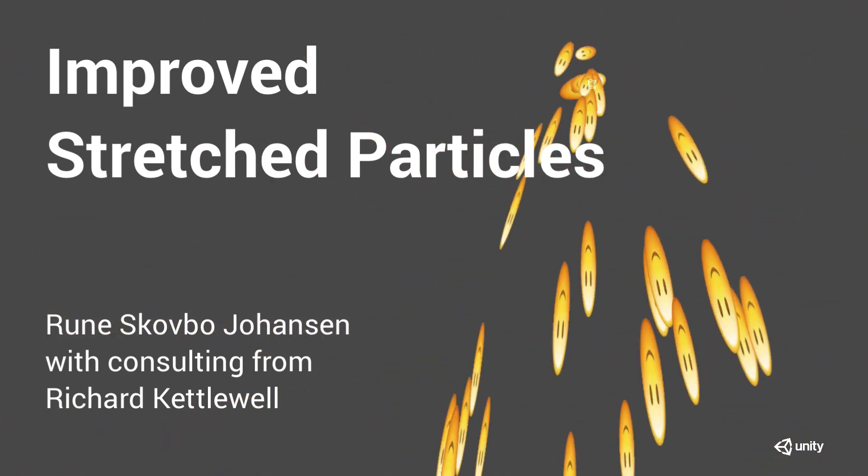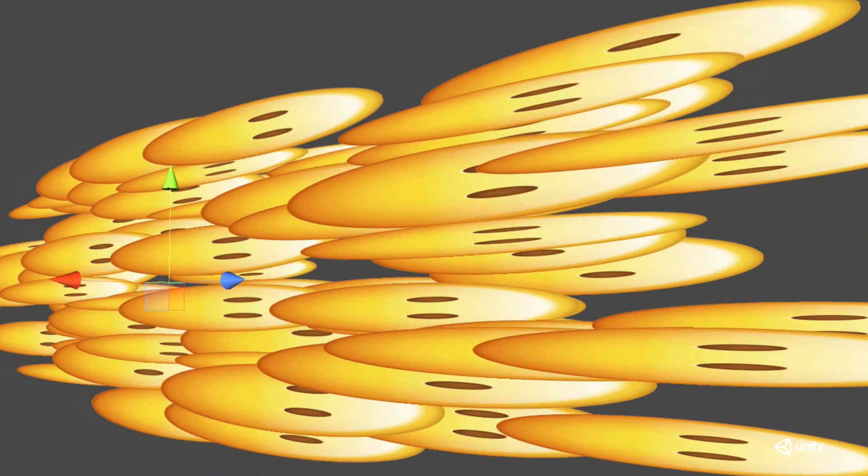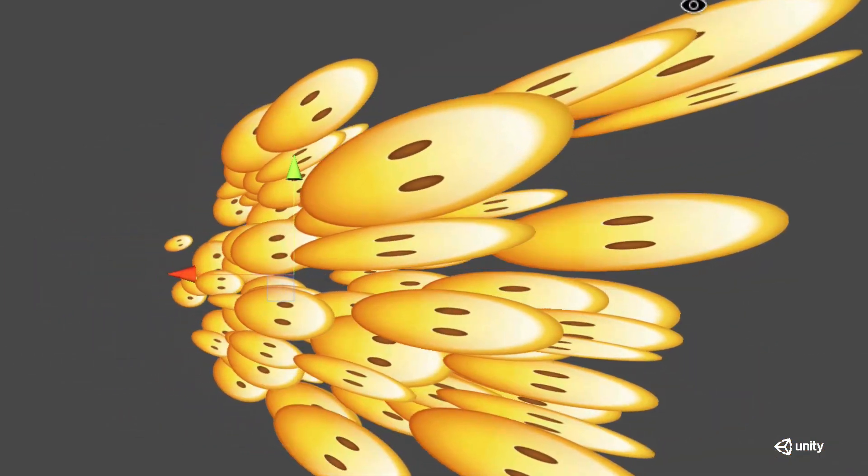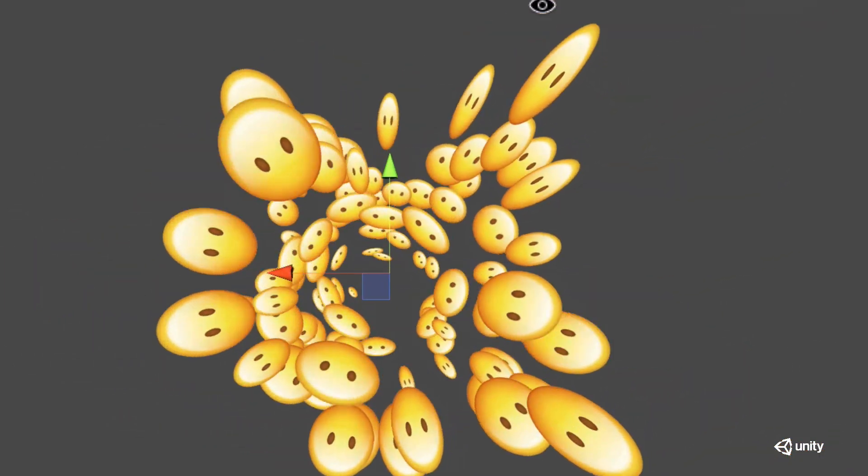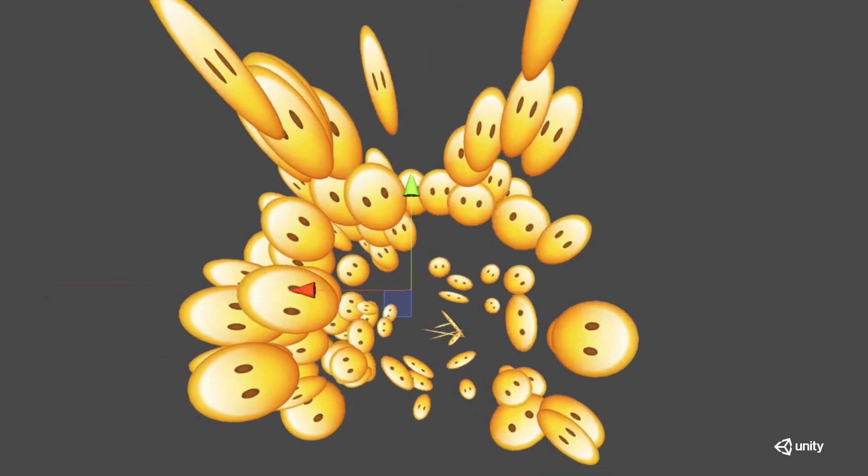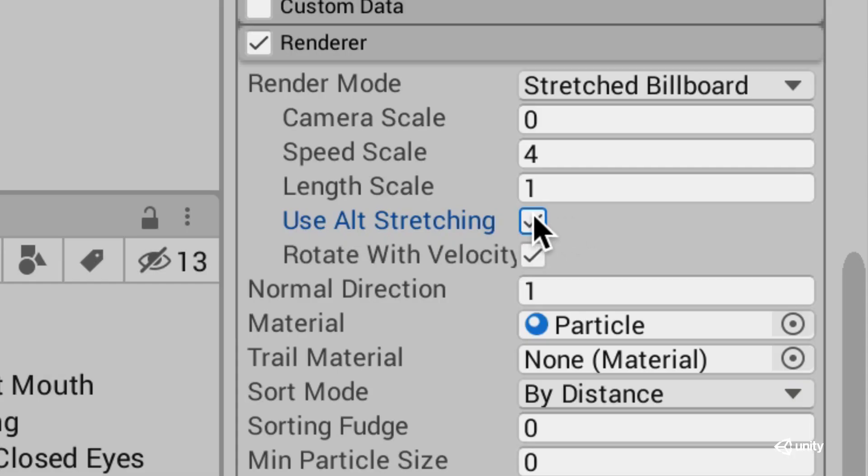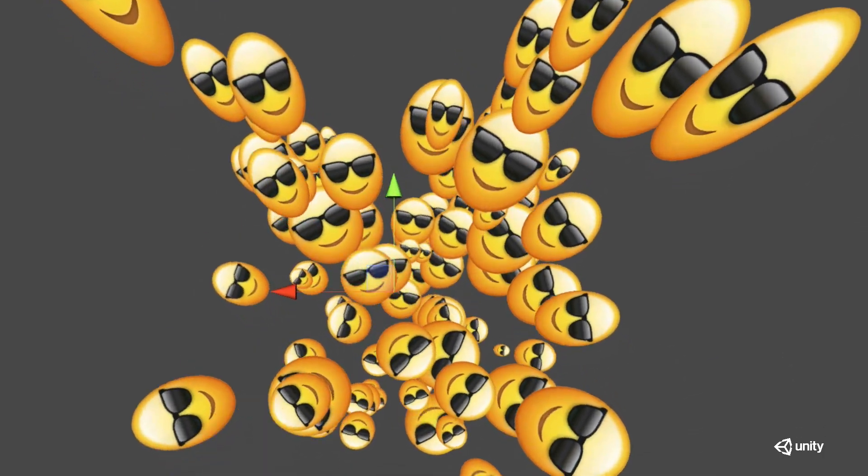Particle systems are always nice, and stretched particles are great. However, stretched particles in Unity today don't always look so good. When you look at them straight on, they'll get all squashed. That's now fixed with a new stretching mode. No more squashed particles.